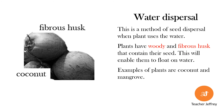Coconut and mangrove use water as a method of seed dispersal. They are usually woody and have a fibrous husk, enabling them to float on water.